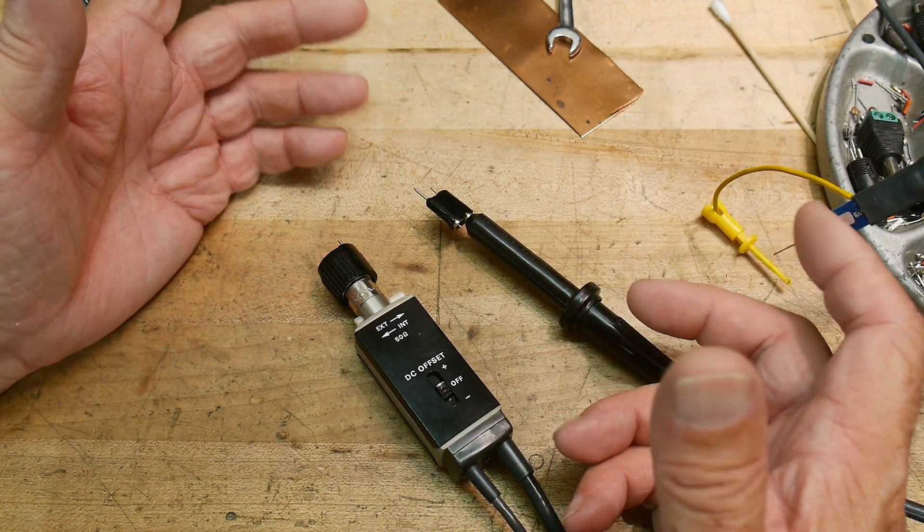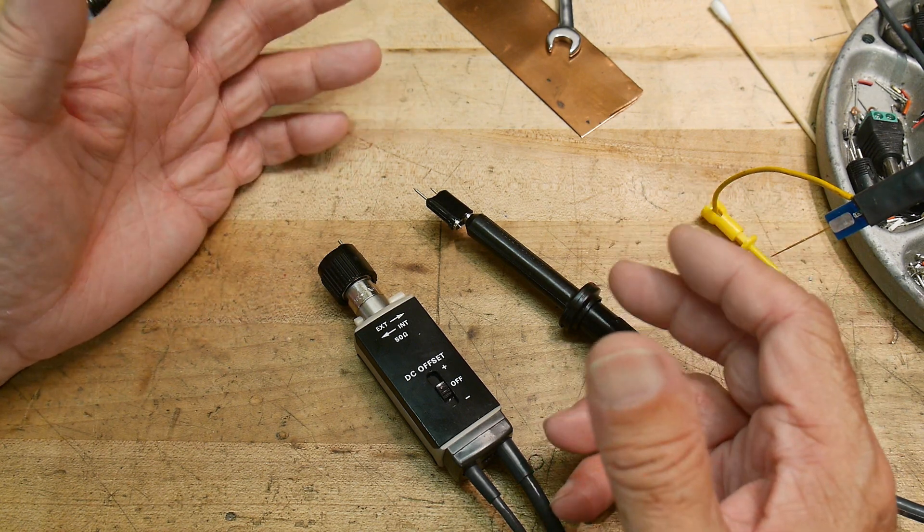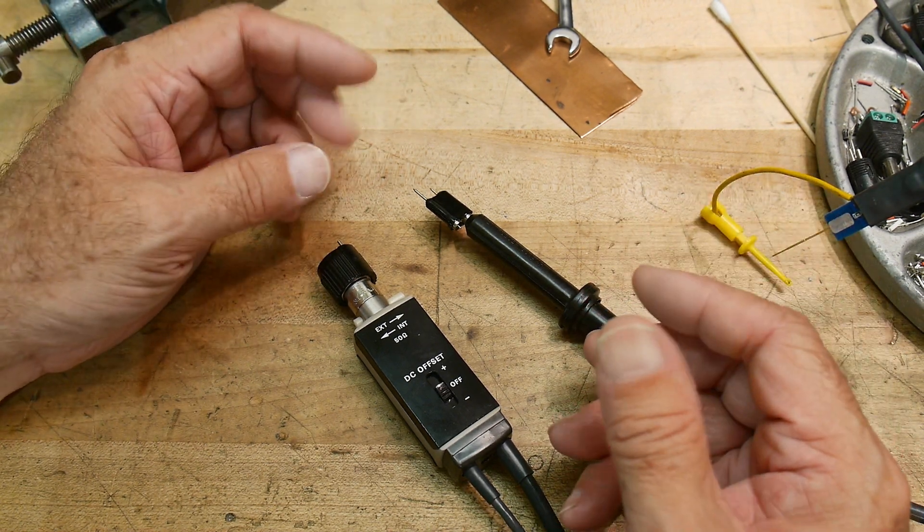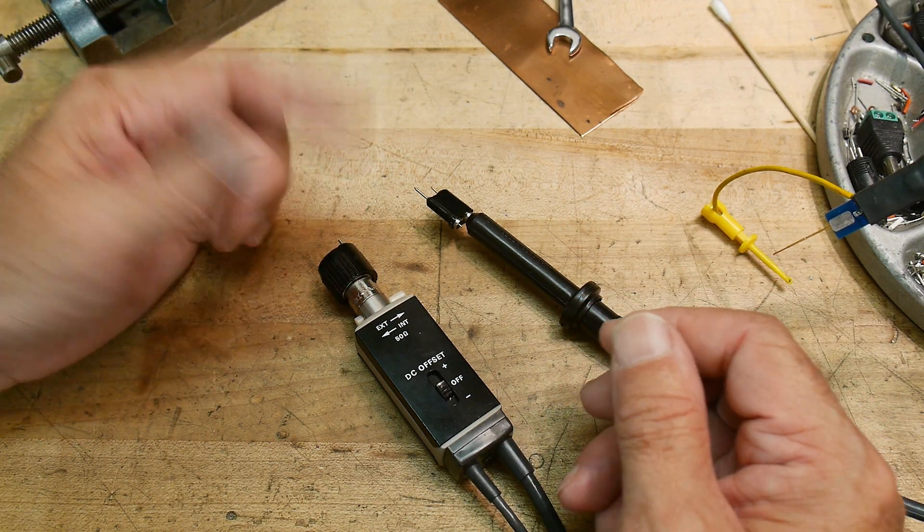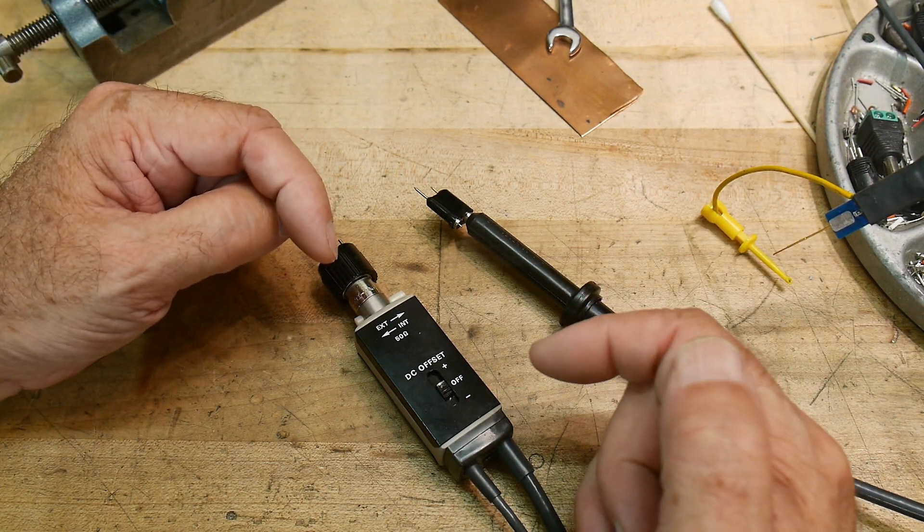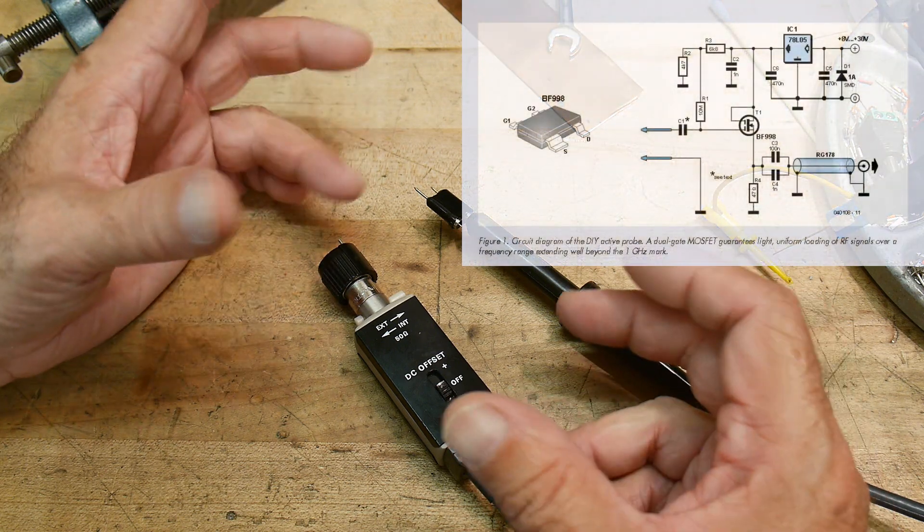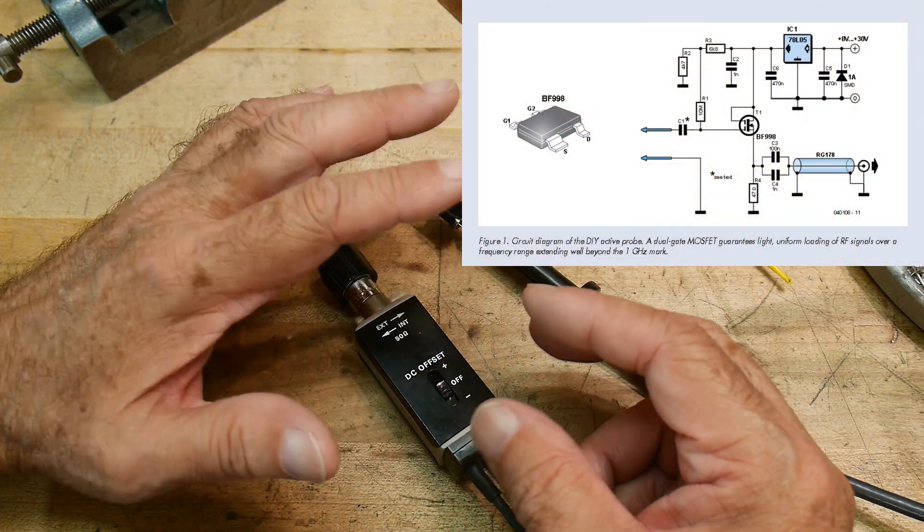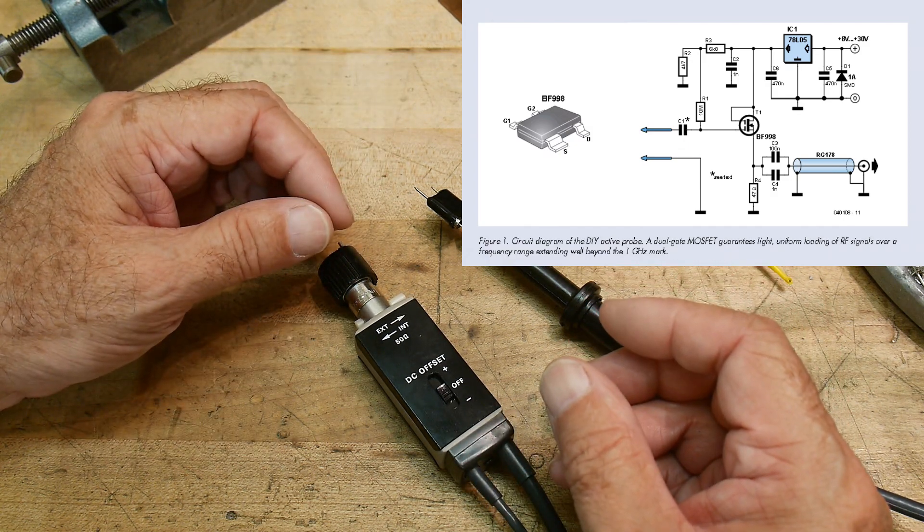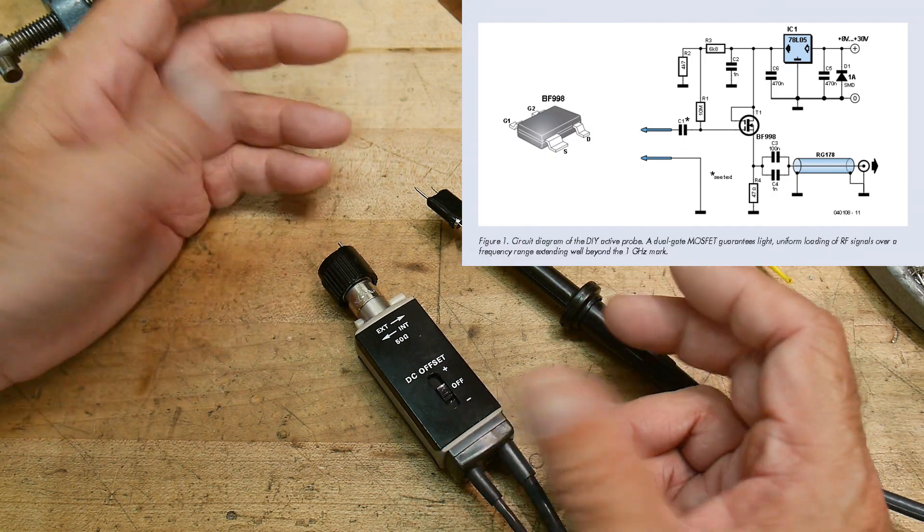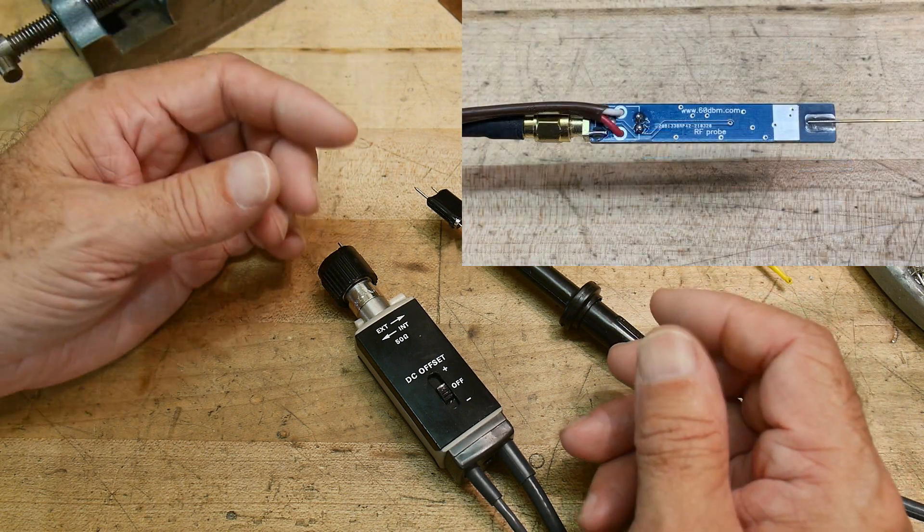They are an FET probe all on one circuit board and here's the schematic for it. It's very very basic, there's no offset adjustments, there's very little compensation for it and everything, so it's what you would build as a DIY project.